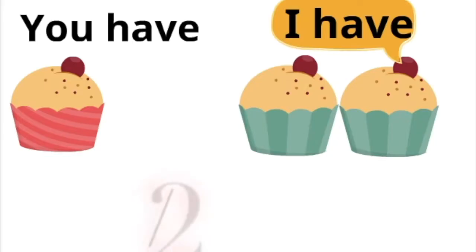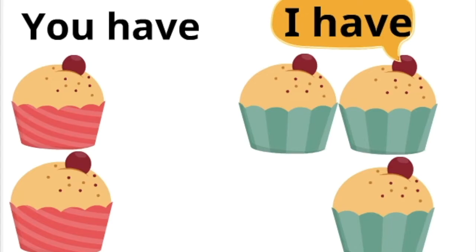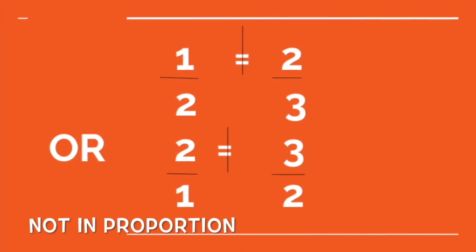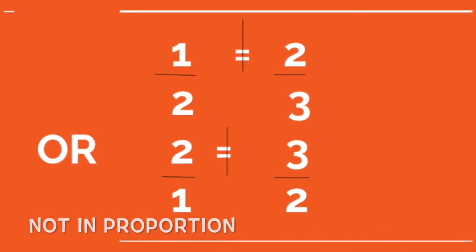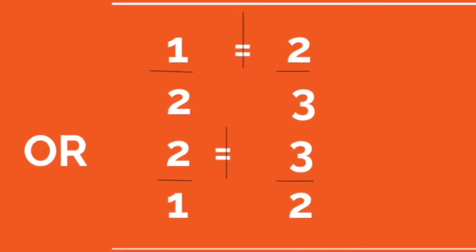Let us take a different example. Suppose one day she gives you one cake and me two cakes. But next day she gives you two cakes and me three cakes. Then ratios are 1 by 2 and 2 by 3. They are not in proportion as they are not equivalent.